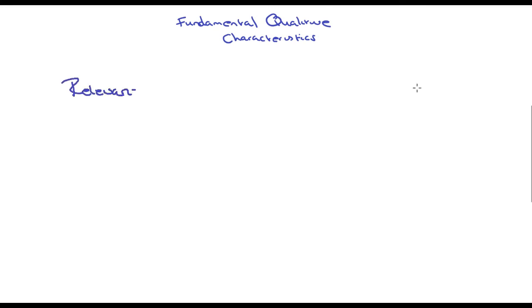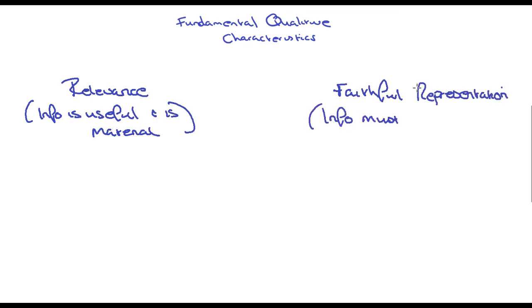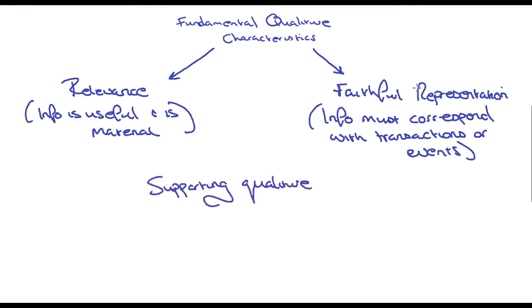And over here we have relevance. So that information is useful and is material. Over here we've got faithful representation. So the info must correspond with transactions or events. Let's draw a little arrow here and an arrow here. And then here we've got the supporting qualitative characteristics.